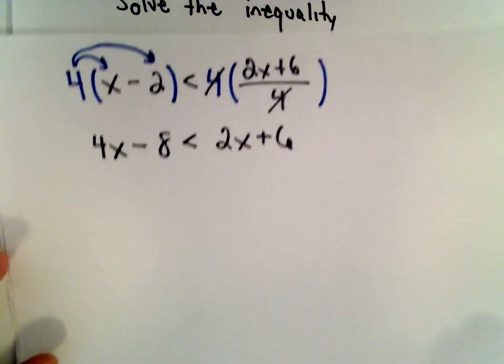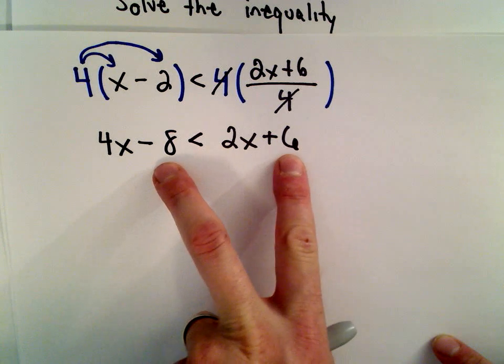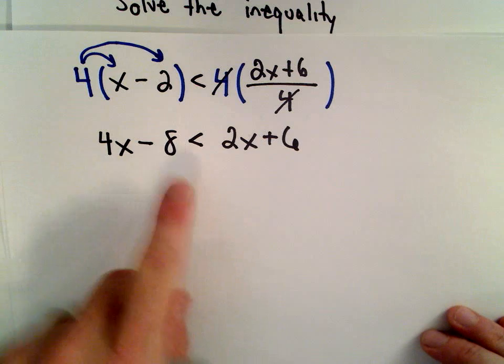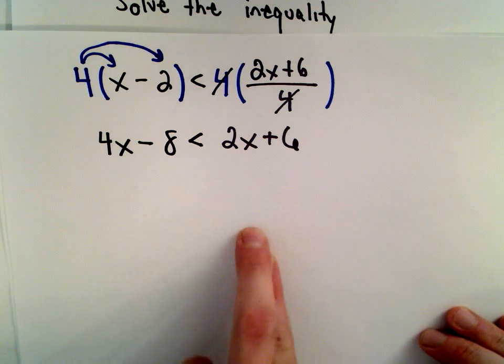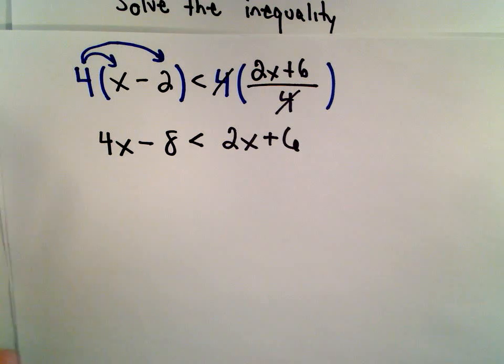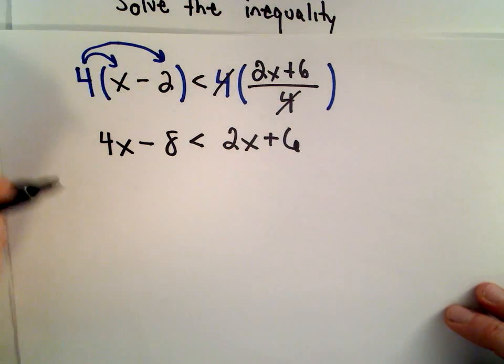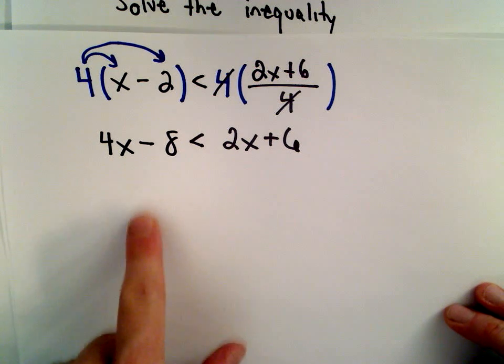The next thing I want to do is combine the terms involving x and also combine the constants. It doesn't matter the order in which you do it. First, let's get the constants together. I'm going to put all the x's on the left side and all the constants on the right side, just to pick an order. You could do it opposite, it doesn't matter.